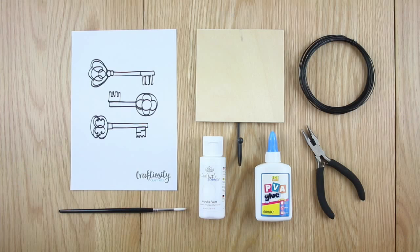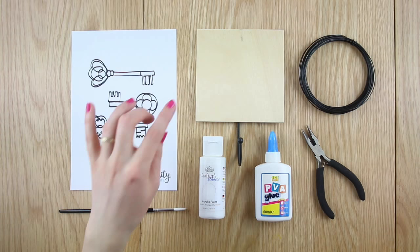Inside the kit you'll find your template, paintbrush, wooden hook, white paint, PVA glue, sculpting wire and pliers.